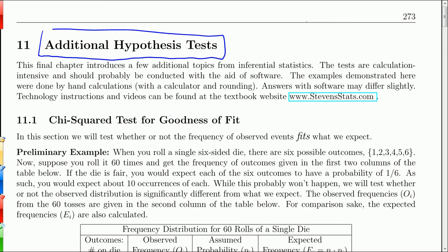Only three kinds. We're going to do the chi-squared test for goodness of fit, where we see whether or not the frequency of observed events fits what we expect.